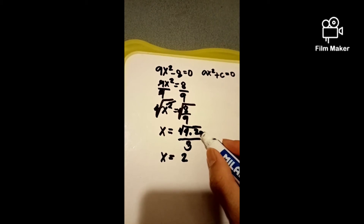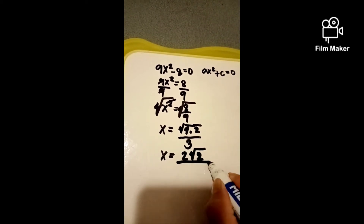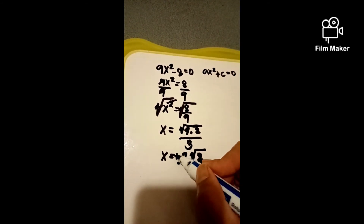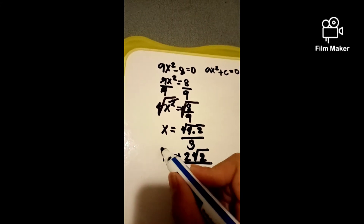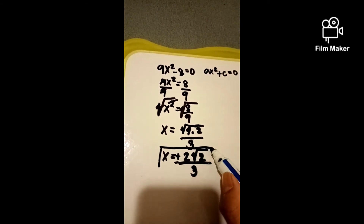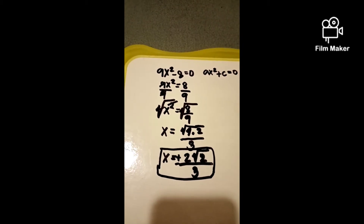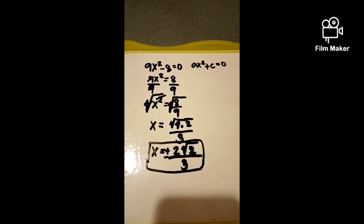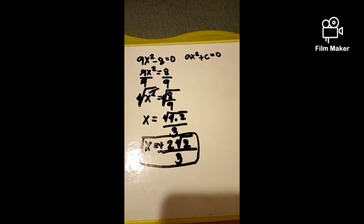Since 2 doesn't have a perfect square root, we just place the square root sign over the 2. So x equals positive or negative 2 square root of 2 over 3. This is the value of x. Now let's check these two real solutions by solving the original equation.